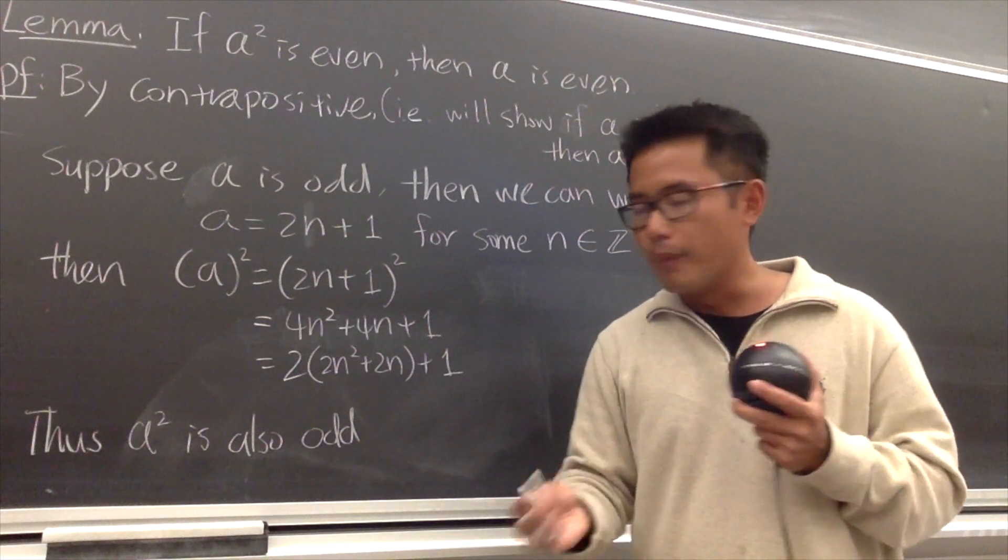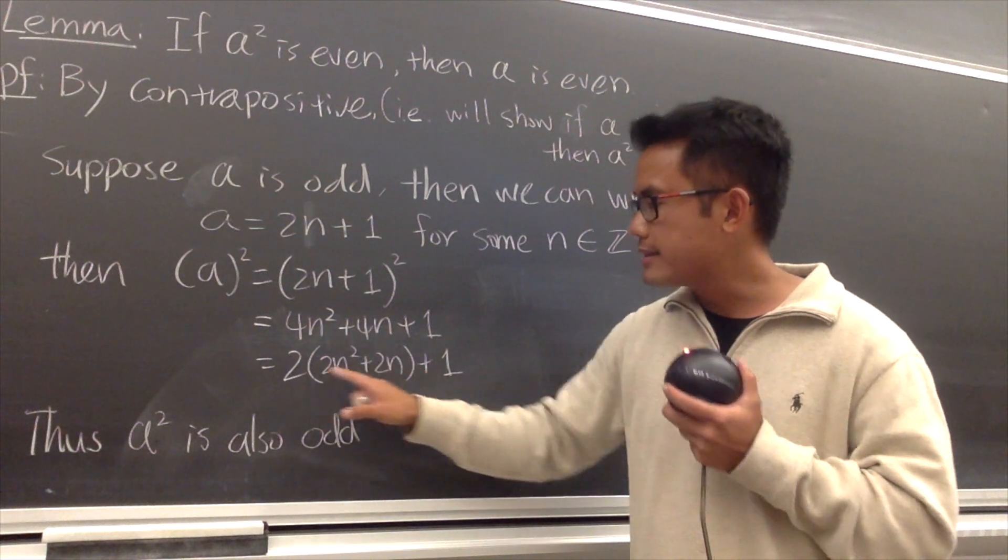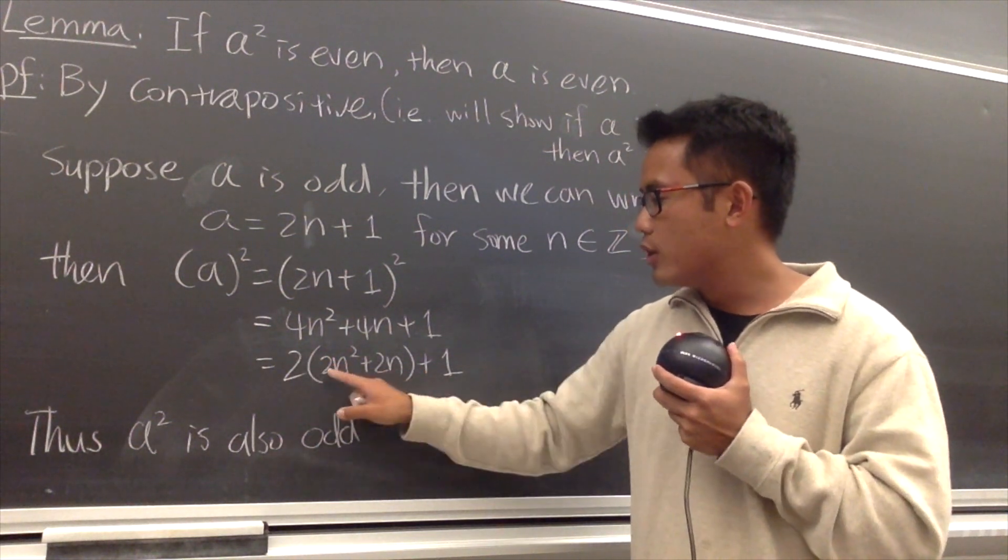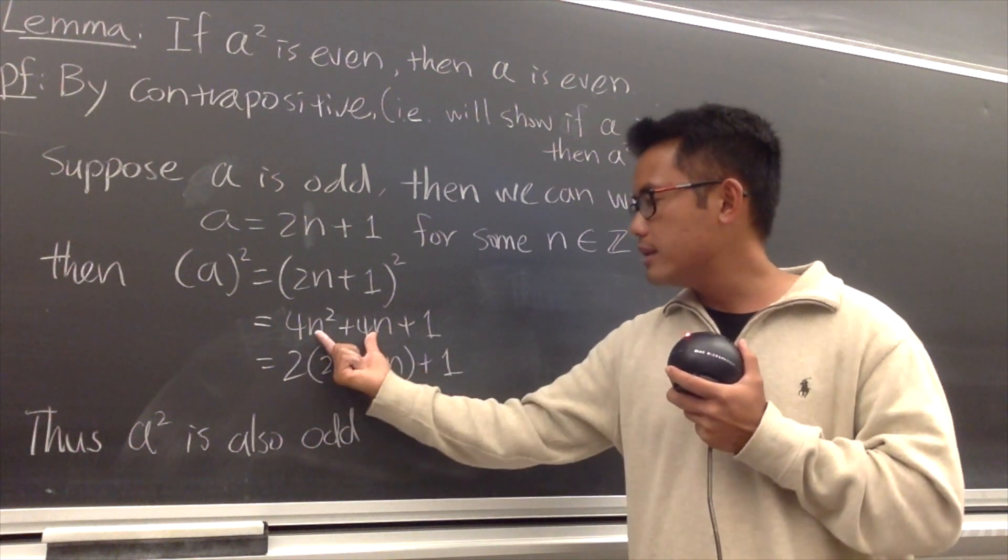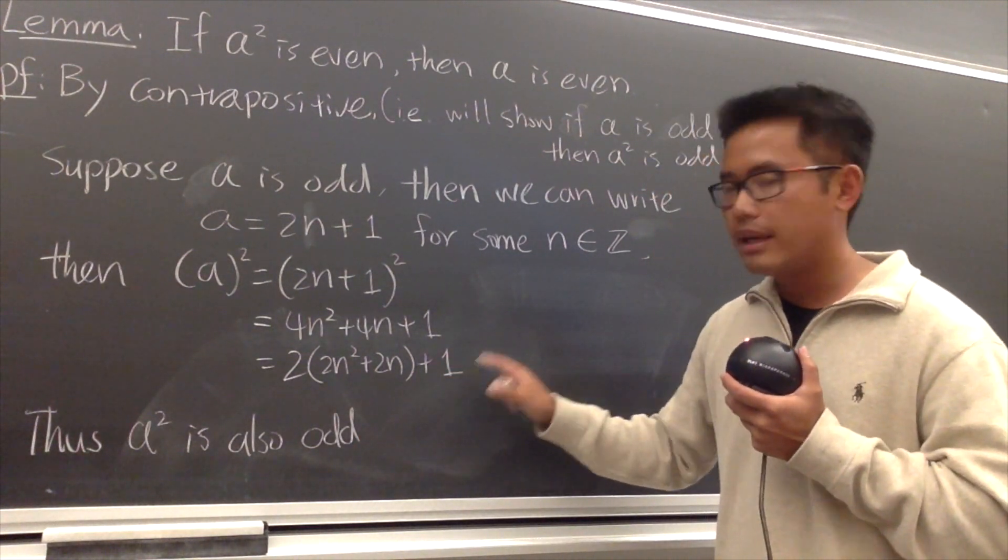And to be technical, from here, you must factor out a 2, and then put down the rest. So we will have 2 times (2n squared plus 2n), and then you must have the plus 1 at the end.